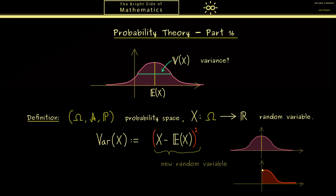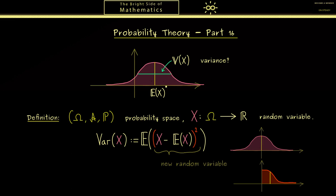For example, in the continuous case this could be a PDF of this squared random variable. The important part is that here we can measure a non-zero expectation, and exactly this is what we want to calculate — we call it the variance of X. The only assumption we need is that this expectation exists, and in that case we have a well-defined number telling us how much X deviates from its expectation.